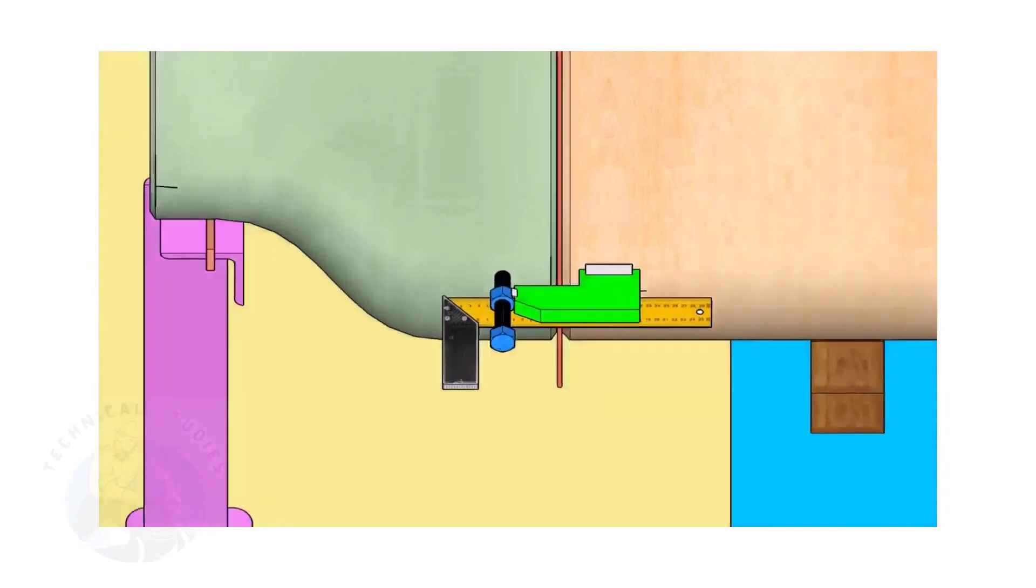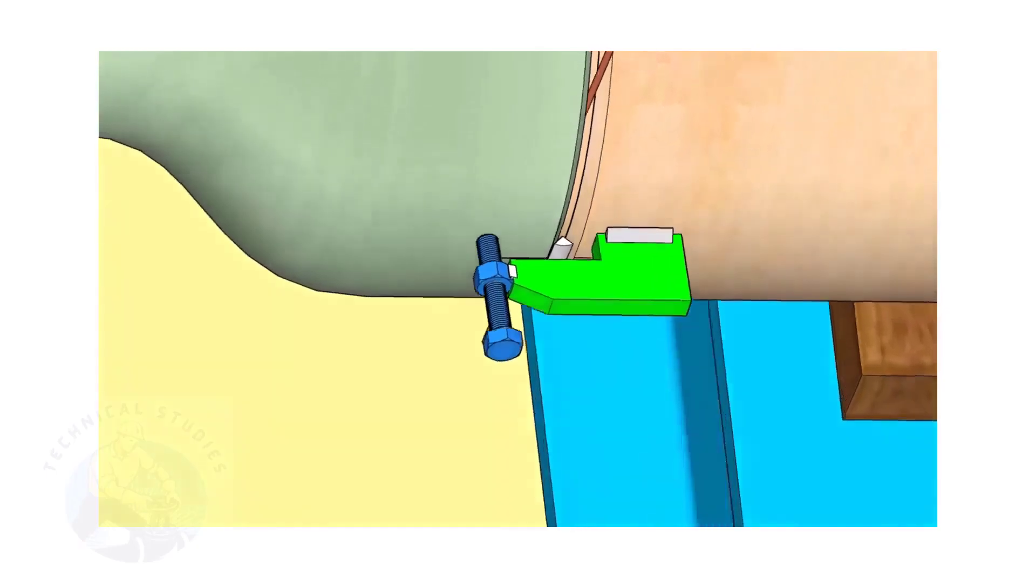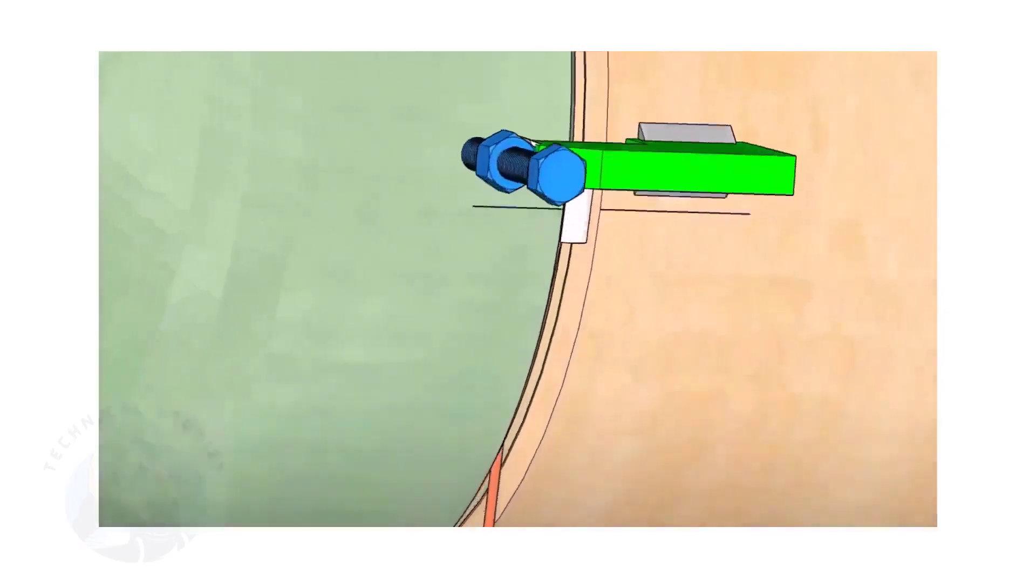Correct the straightness of the joint on both sides. If required, remove the gap rod. Tack weld on both sides.